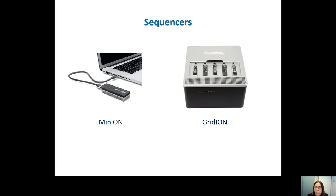In our lab, we use two different types of nanopore sequencers. We use the MinION — this is a very small, quite portable, and easy-to-use sequencing machine. It's about the size of a stapler and you can connect it to a computer, then run the software and the sequencing.